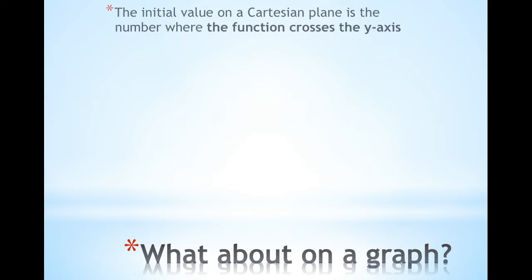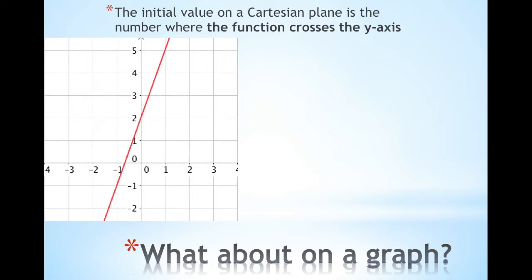But what about on a graph? The initial value on a Cartesian plane is the number where the function crosses the y-axis. Remember at the beginning of this PowerPoint I said this is the x-axis and this is the y-axis. Where the function crosses the y-axis is the initial value.